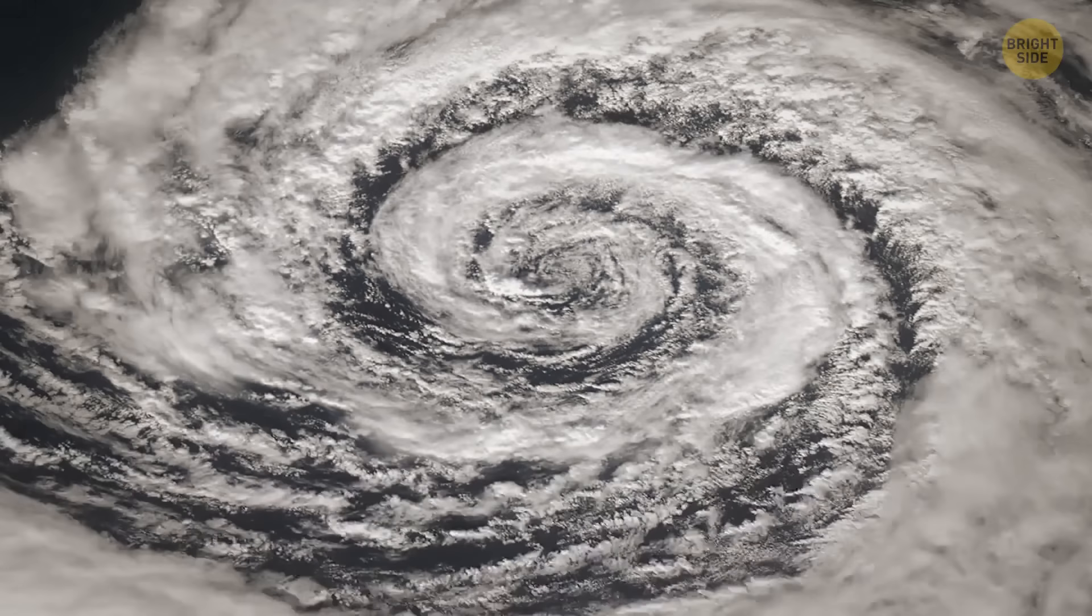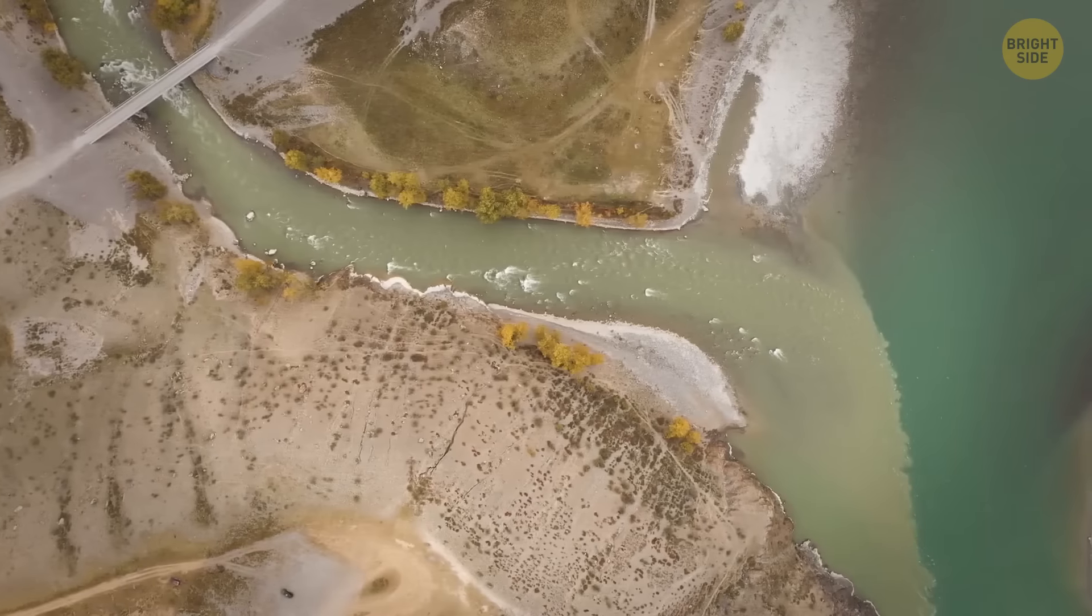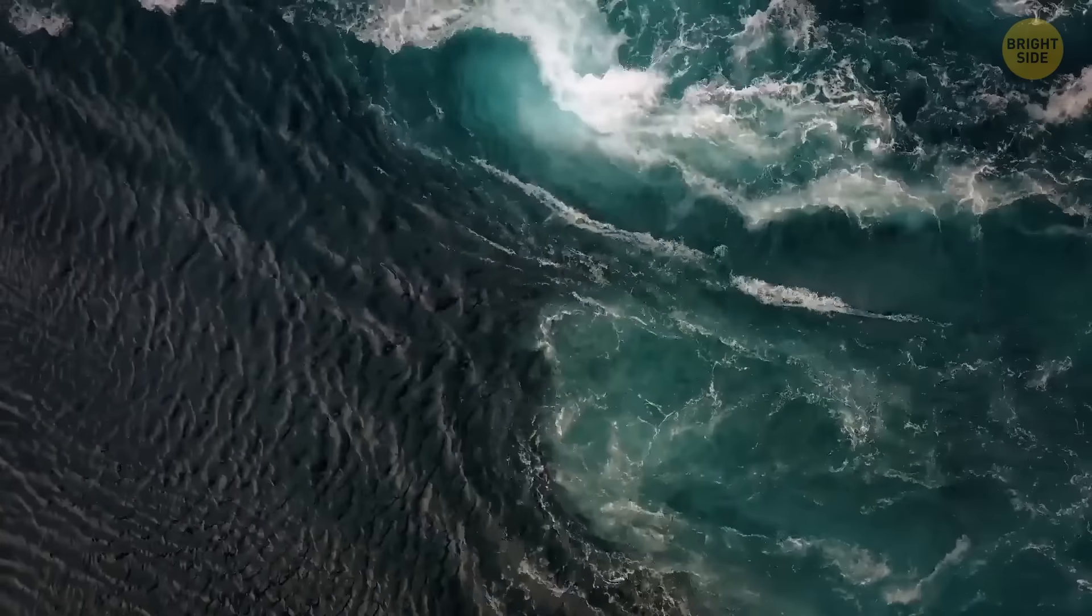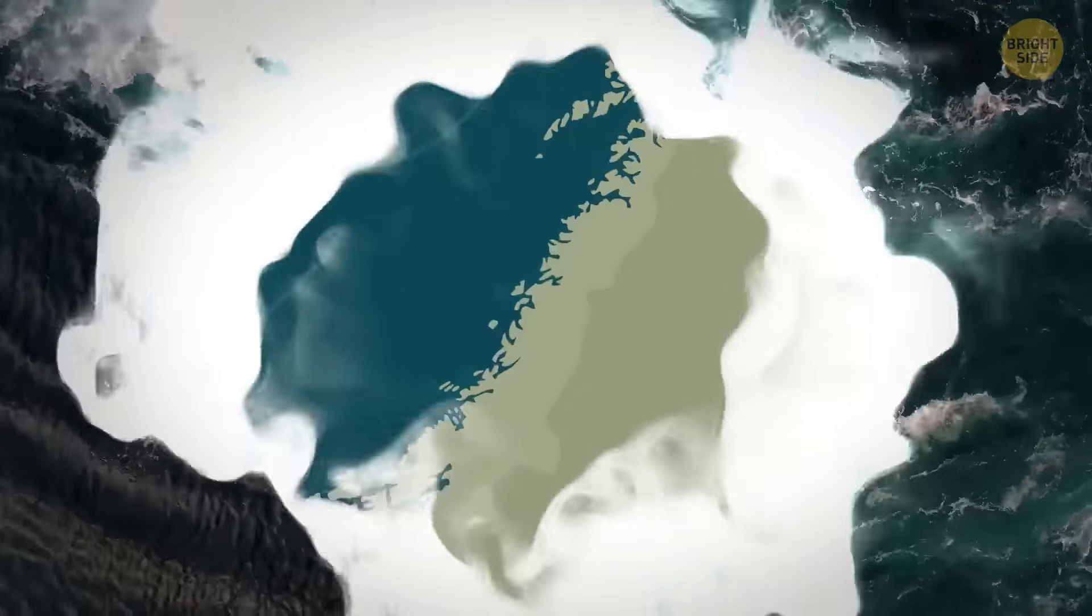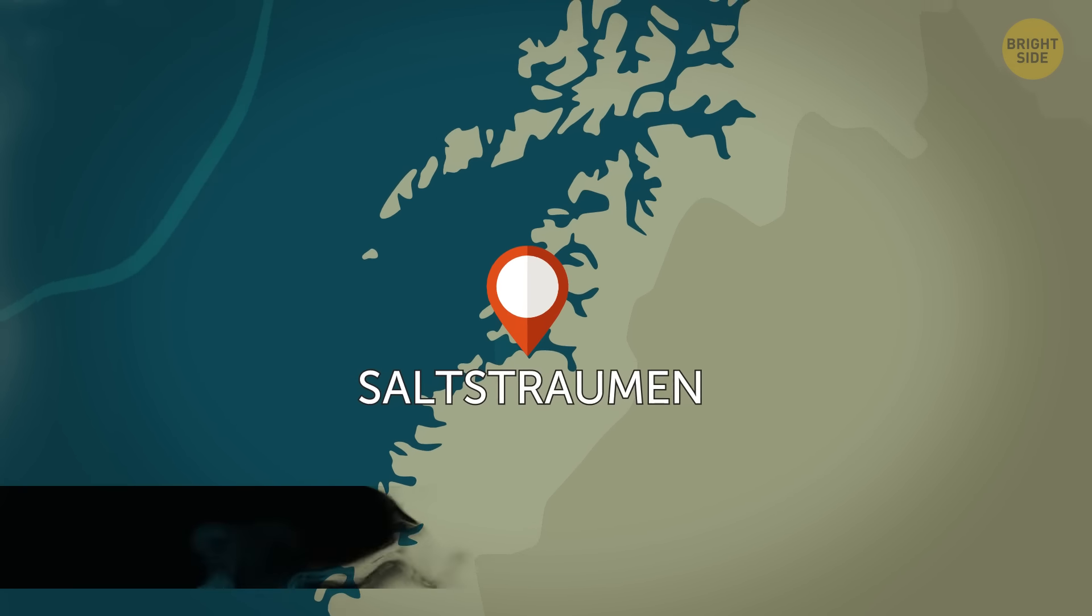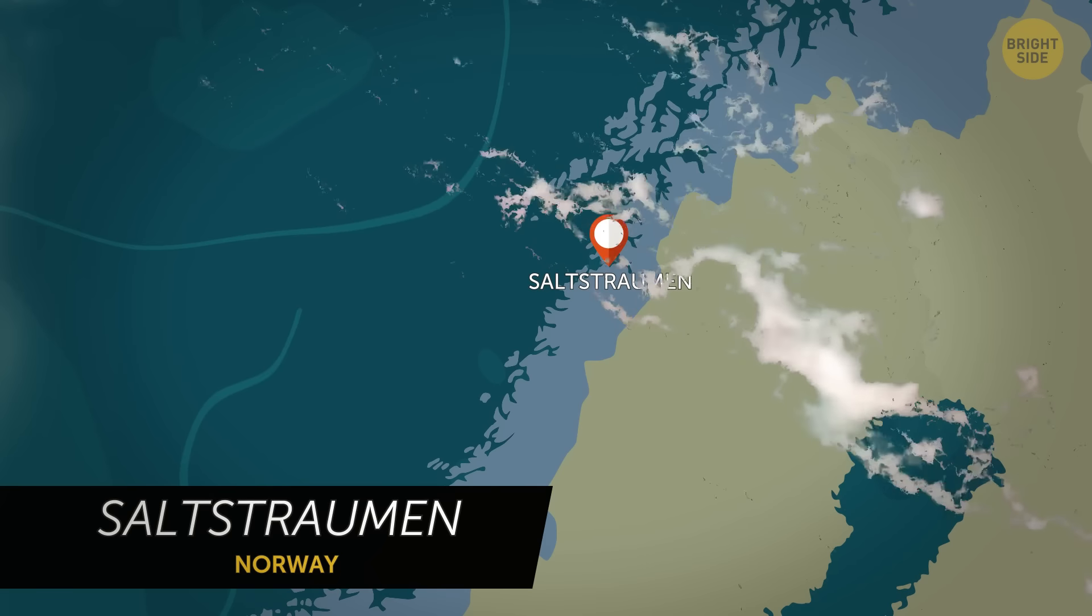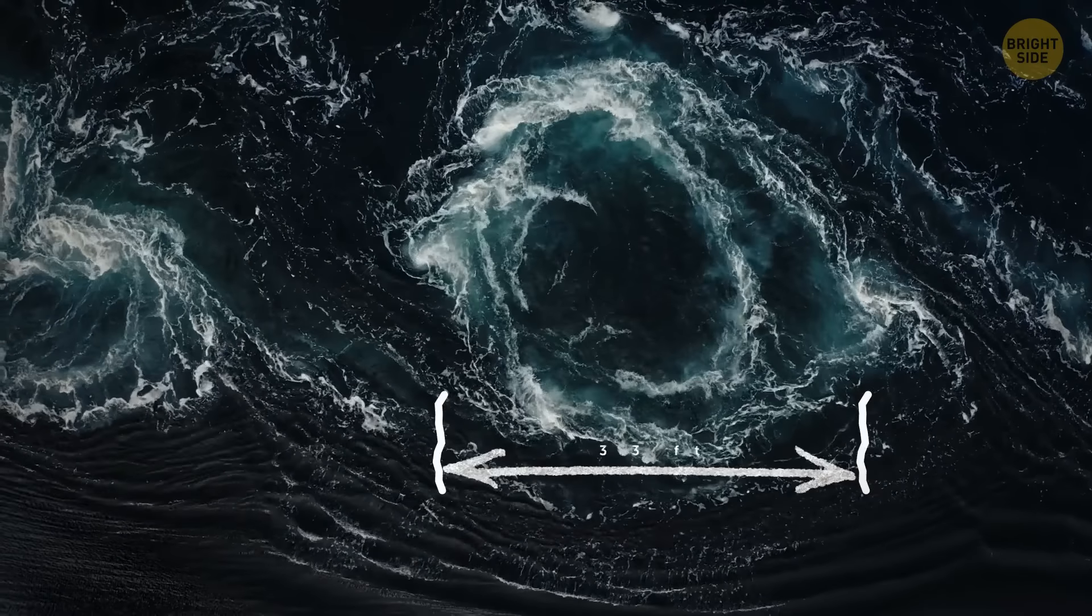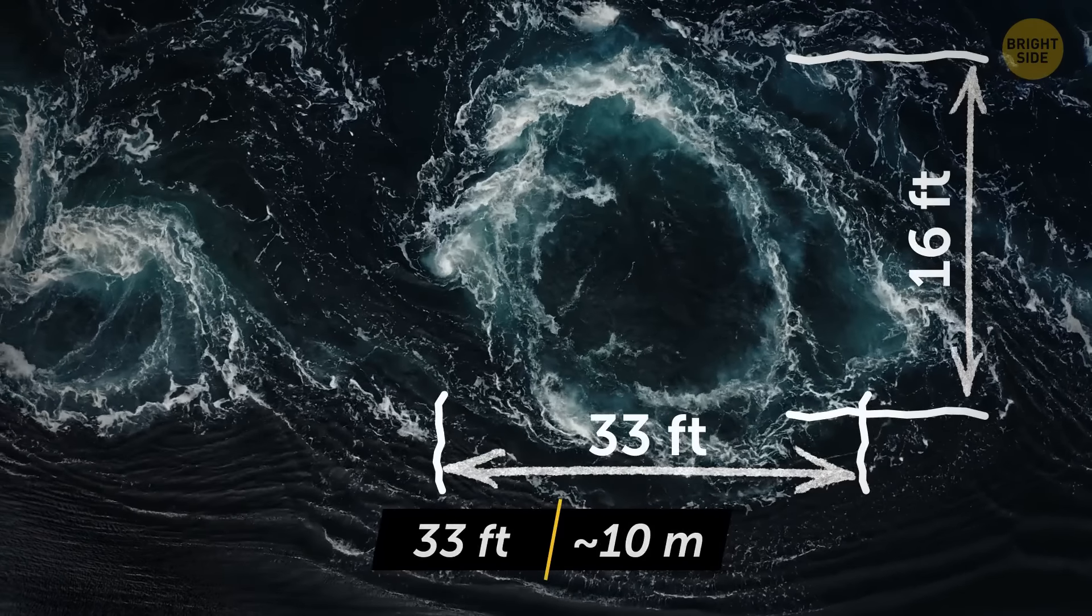Such strong whirlpools are called maelstroms. They are usually formed when two currents collide near narrow reservoirs and straits. The world's largest and most dangerous maelstrom is located in the Saltstrauman Strait in northern Norway. Every six hours, a whirlpool forms there with a diameter of about 33 feet wide and 16 feet deep.